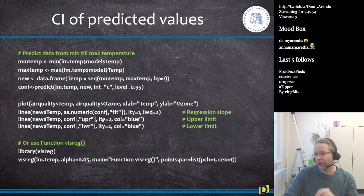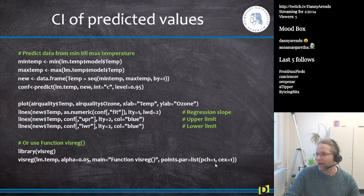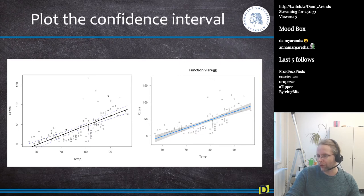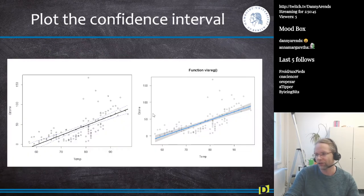Generally we don't do this manually — you can use a library. Use visreg (visualize regression) and just give it the linear model, the alpha, and some parameters to make it look pretty. The visreg function shows the regression line with the standard error in grey shading, so that's how you visualize your confidence interval.